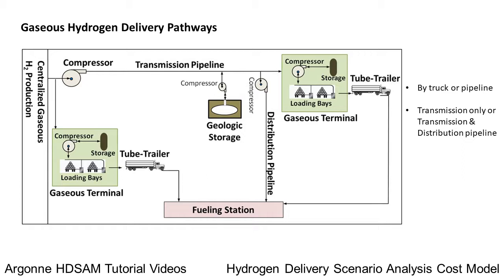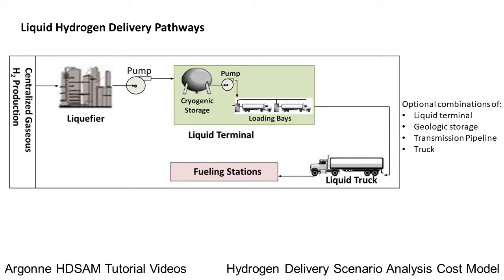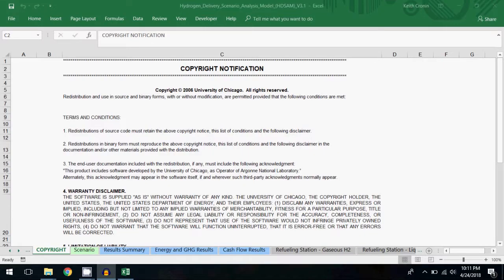Gaseous hydrogen delivery pathways include components like compression, transmission via pipeline with optional geologic storage, and two modal options: tube trailer and distribution pipeline. Liquid hydrogen delivery pathways can incorporate similar components, as well as a liquid terminal.